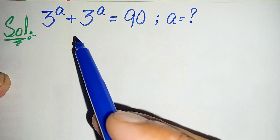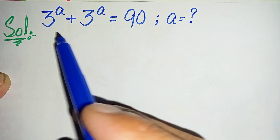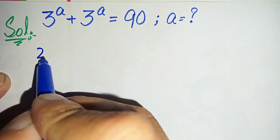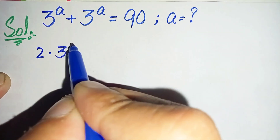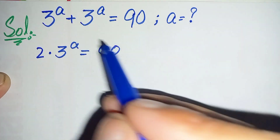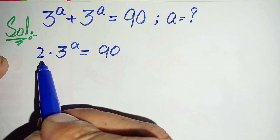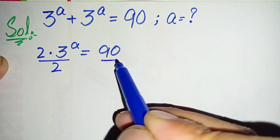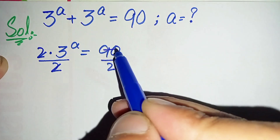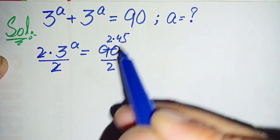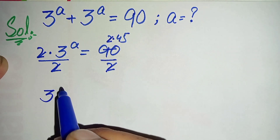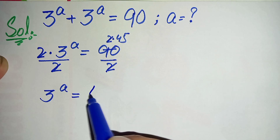First of all we will add these two numbers on the left hand side. Since it is the same number added two times, we can write it as 2 times 3 to the power a is equal to 90. Now we will divide both sides by 2 to eliminate the 2 from the left hand side. We can write 90 as 2 times 45, so the 2's cancel and we get 3 to the power a is equal to 45.